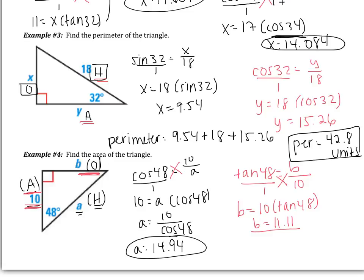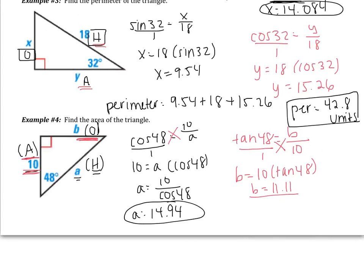Now the last thing is it asks us to find the area. Hopefully remember that area is 1 half base times height. Remember that the base and the height are perpendicular. So the base in this case is B, so it's going to be 1 half of 11.11. The height is 10, because it's the side perpendicular.